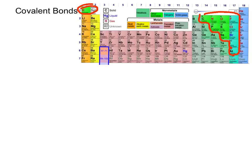Let's start with chlorine. If we draw a chlorine atom, it's in group 17, so it has seven valence electrons — six paired and one single electron. You can see right away that chlorine is unstable.